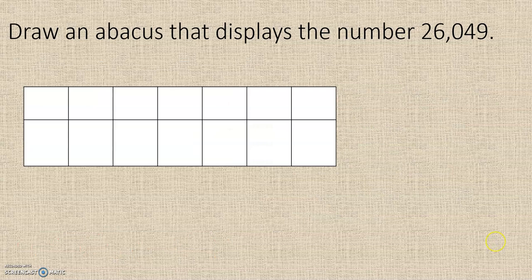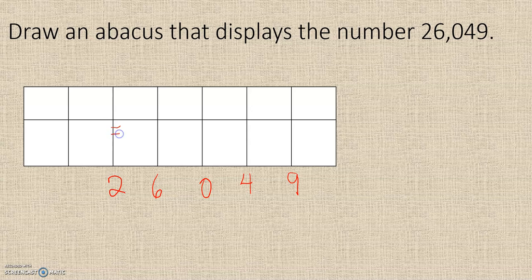Draw an abacus that displays the number 26,049. We can think of this as needing to show 9, 4, 0, 6, and 2. Our 2 is going to be 2 below. Our 4 will be 4 below. And then our digits that are over 5: to get 6, we need 5 up there and 1 below. And to get 9, we need 5 above and 4 below.